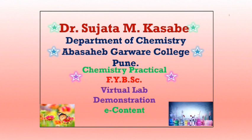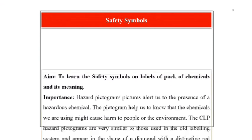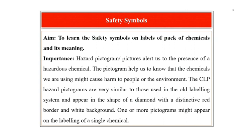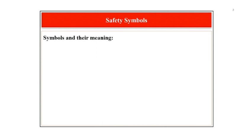The aim of this experiment is to learn the safety symbols on labels of packs of chemicals and their meaning and importance. Hazard pictograms alert us to the presence of a hazardous chemical and help us know that the chemicals we are using might cause harm to people or the environment. The CLP hazard pictograms appear in the shape of a diamond with a distinctive red border and white background. One or more pictograms might appear on the labelling of a single chemical. Let us see some symbols and their meaning.